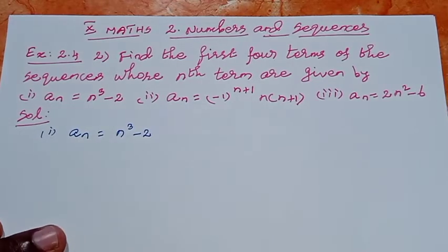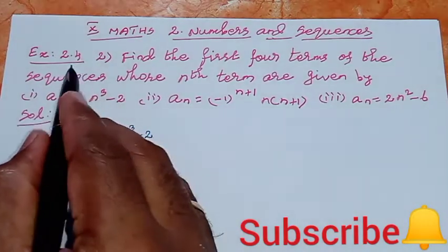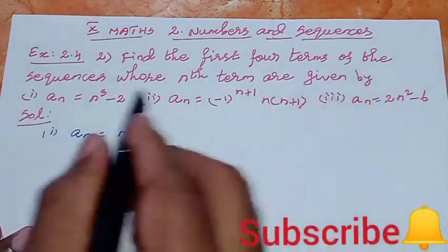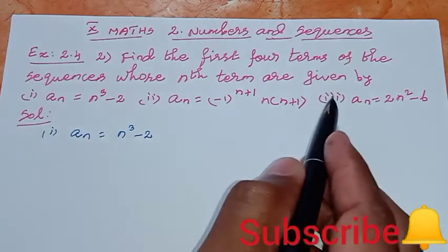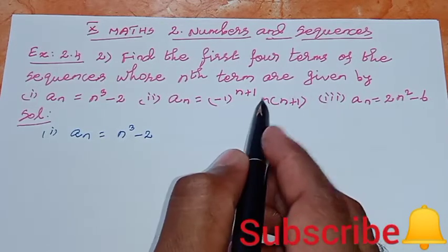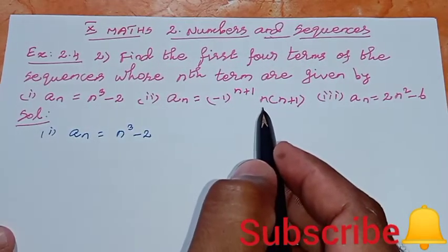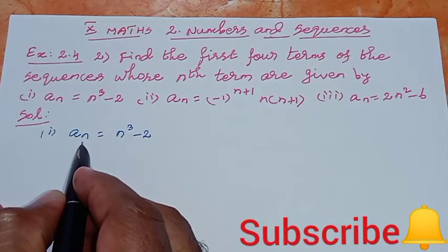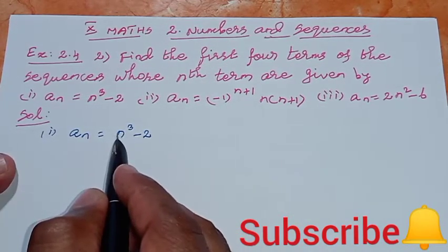Dear students, in this video we are watching 10th Maths, second chapter, Numbers and Sequences, Exercise 2.4, sum number 2. See the question: find the first four terms of the sequences whose nth terms are given. There are three sequences, and we find the first four terms for each one.